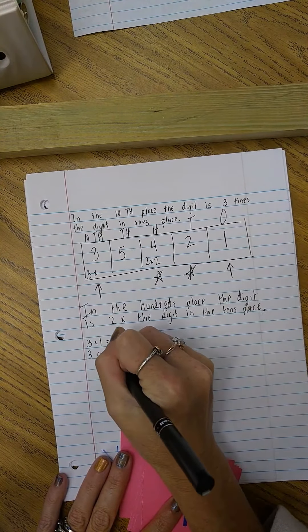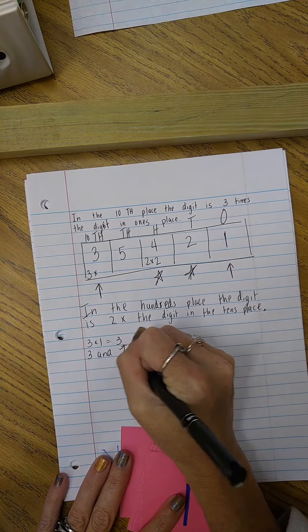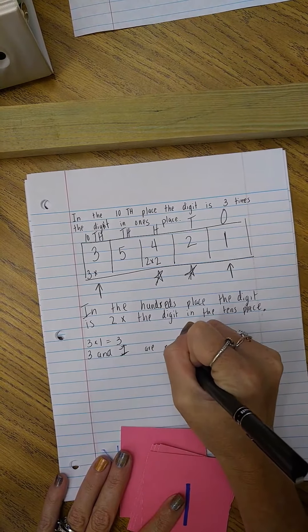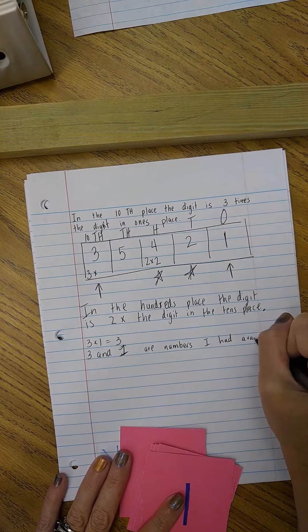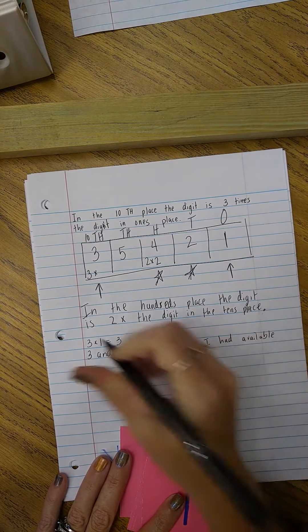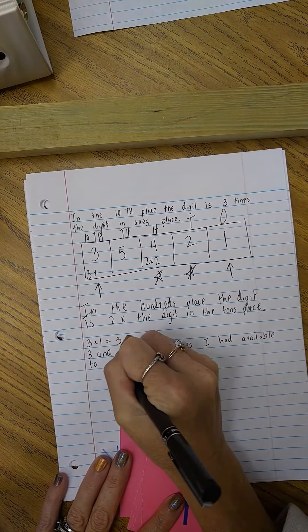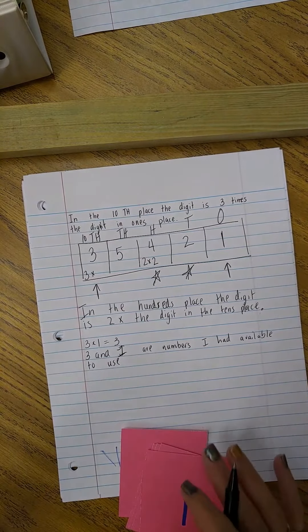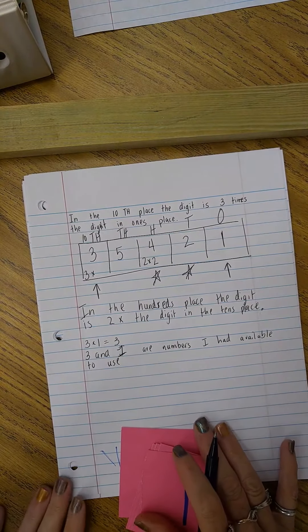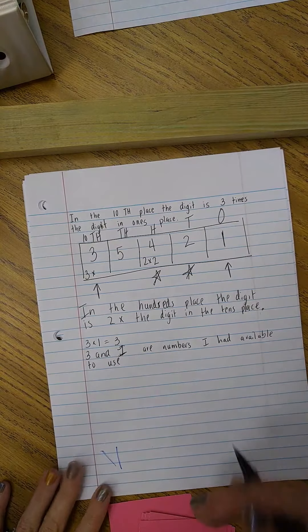Three and one are numbers I had available to use. So you see I put the math to prove it, and then I put that information in here. And then I would need to compare the numbers, which is also a part.